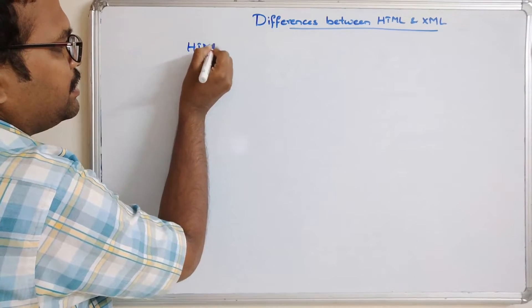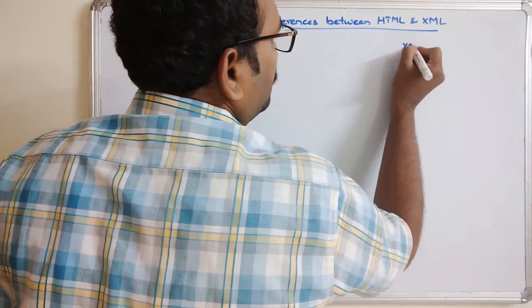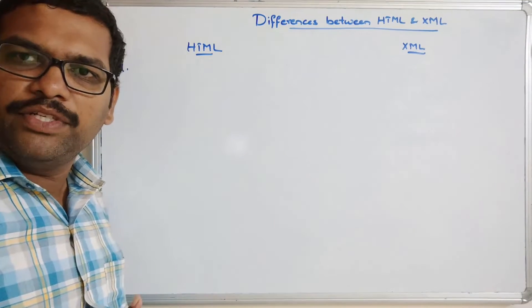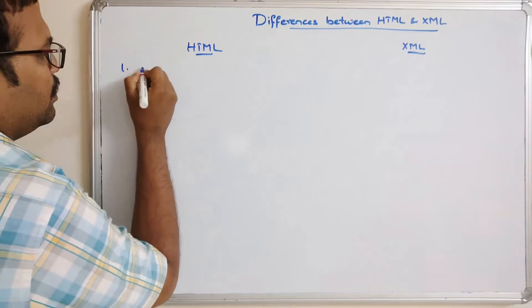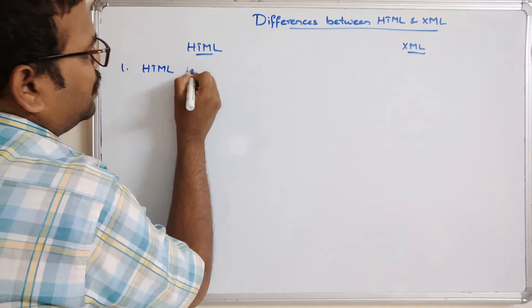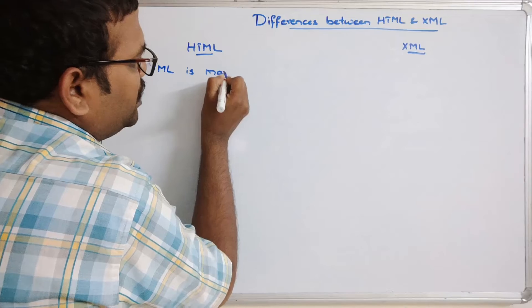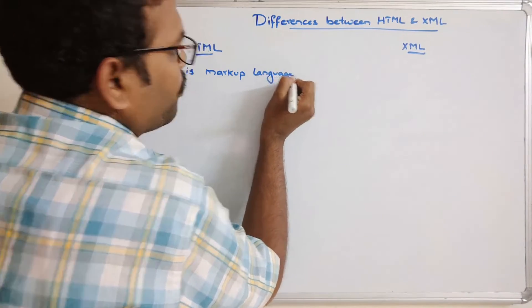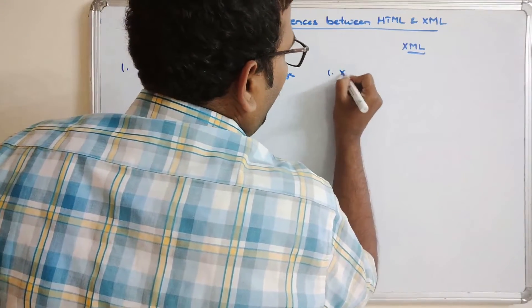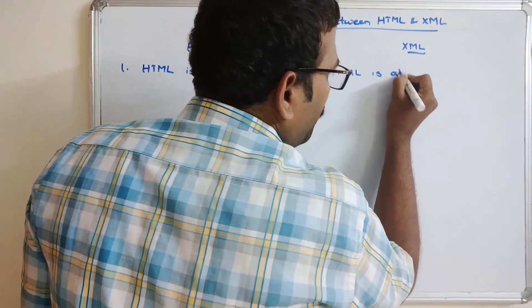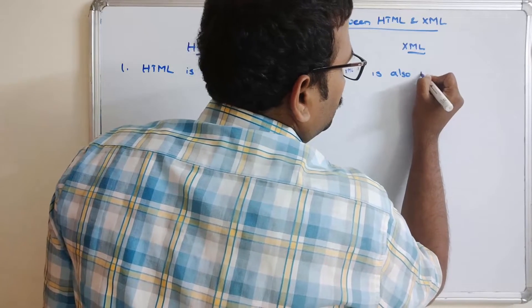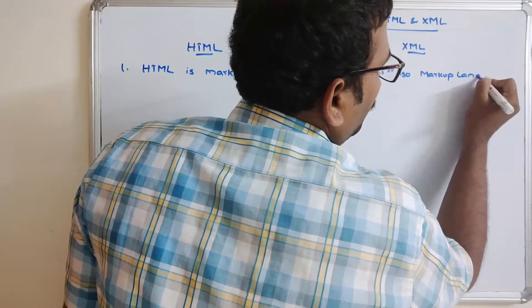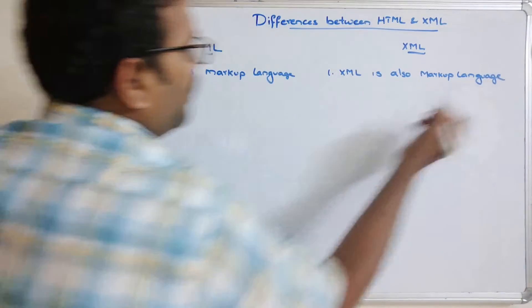So this is HTML and this is XML. First point: both are markup languages. HTML is a markup language, and similarly XML is also a markup language.